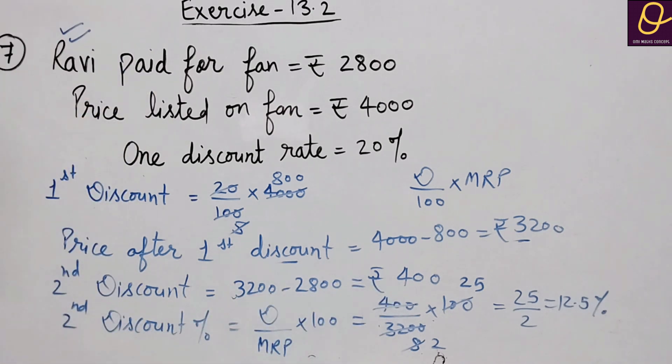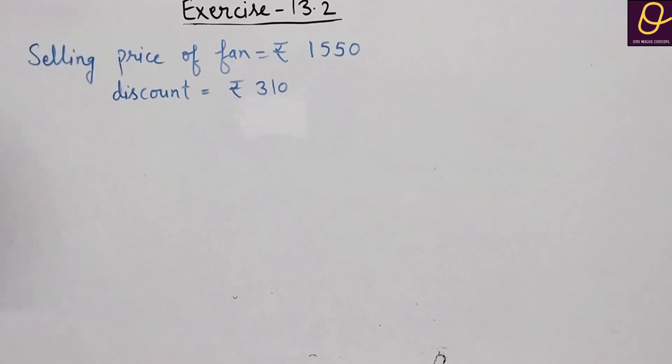Now question number 8. Find the rate of discount being given on a ceiling fan whose selling price is rupees 1550 after deducting a discount of rupees 310 on its MRP.